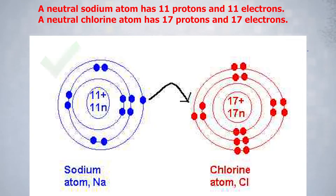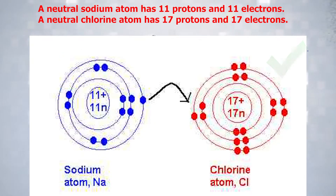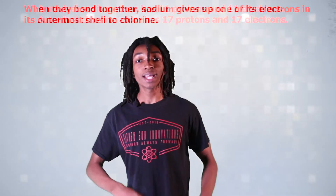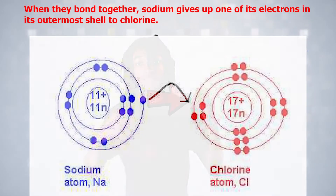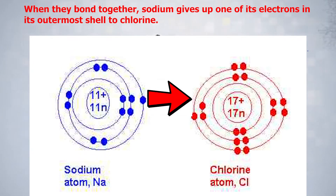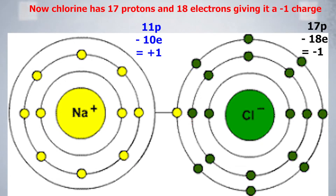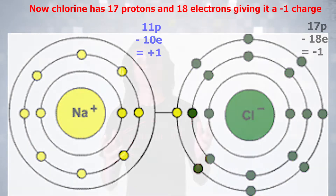A neutral sodium atom has 11 protons and 11 electrons. A neutral chlorine atom has 17 protons and 17 electrons. When they bond together, sodium gives up one of its electrons in its outermost shell to chlorine. Now sodium has 11 protons and 10 electrons, giving it a positive ion charge. And now chlorine has 17 protons and 18 electrons, giving it a negative ion charge.